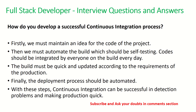How do you develop a successful continuous integration process? First, maintain a clear idea for the code repository — how your version control is set up using Git or Subversion. Then automate the build, which should also cover testing, and the build must be quick and updated to production requirements. Finally, deployment should also be automated using CI/CD pipelines. With these steps, continuous integration can successfully detect early defects and problems.